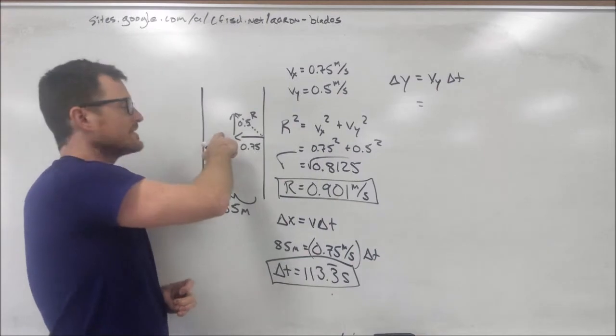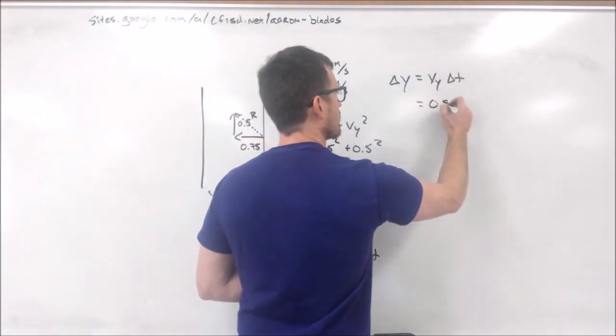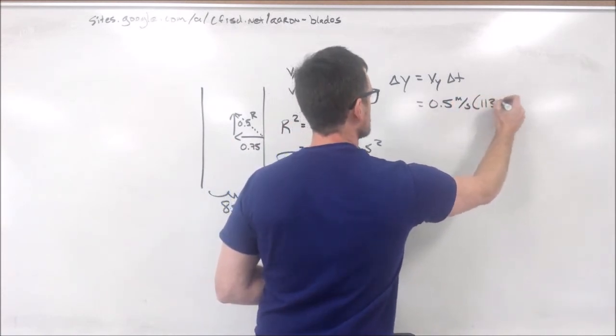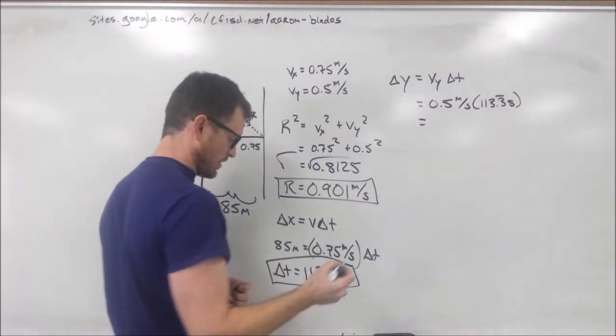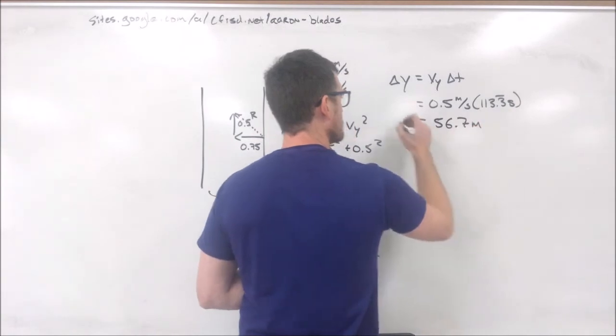We solve for our delta time, and we were already given our v y up here, because again, this v y is not affected by this v x. So, 0.5 meters per second times 113.3 seconds. That gives us a total vertical displacement of 56.7 meters.